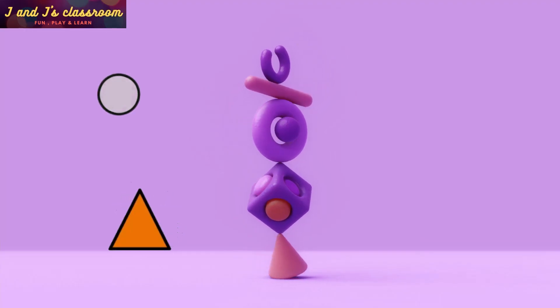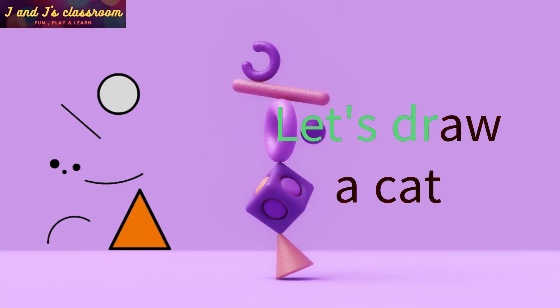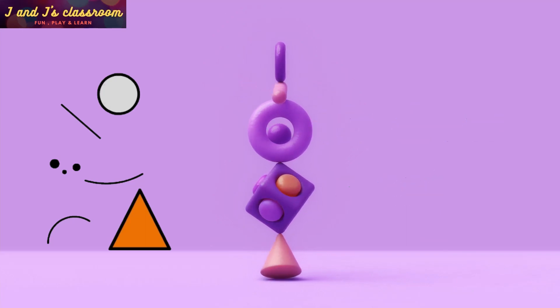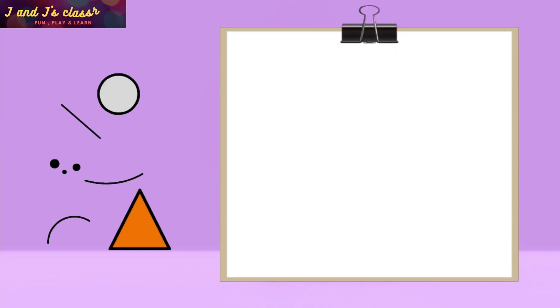Next, we are going to draw a cat using circle, dots, straight lines, curved lines and triangle. Now take a paper and listen carefully before you start your drawing.